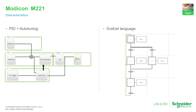Regarding software functionalities, inside the software we can use PID with auto-tuning — you can use the PID controller and then the auto-tune function to tune the control loop. We also have the Grafcet language: instead of using ladder or instruction list, we can use Grafcet.